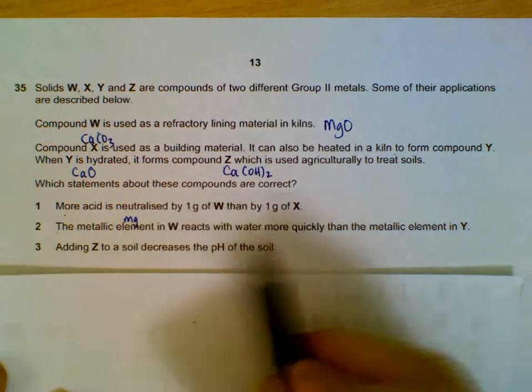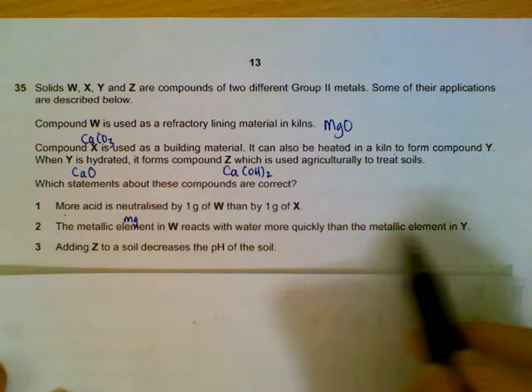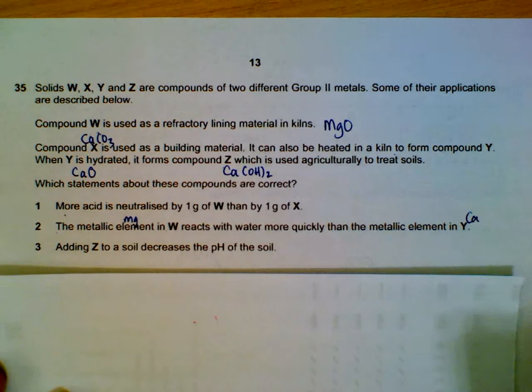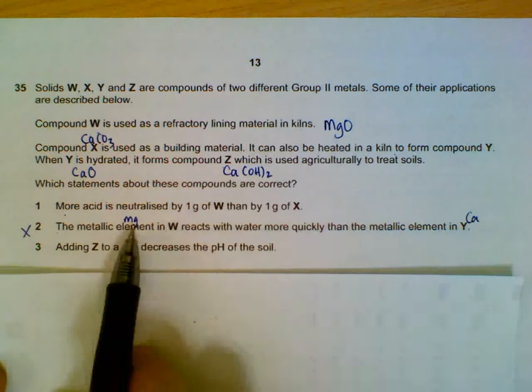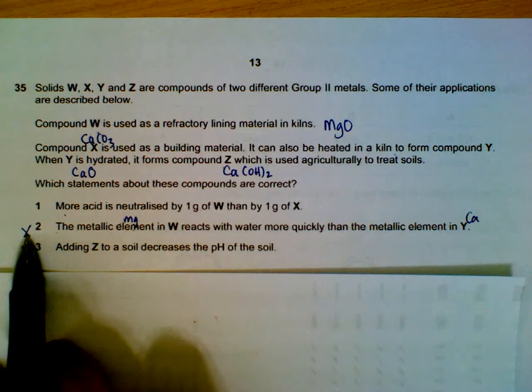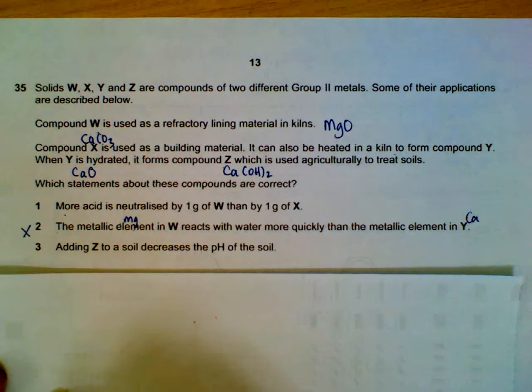Statement 2: the metallic element in W (magnesium) reacts more quickly than the metallic element in Y (calcium). This is a wrong statement because calcium is more reactive than magnesium; it will react faster. By eliminating statement 2, only statement 1 is correct.